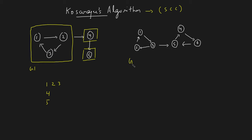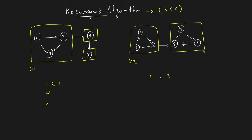For graph g2, the SCCs are: the first is nodes one two three, since every node is reachable to every other node in that group. The second is nodes four five six, which also form a strongly connected component. Only the nodes present in an SCC should be printed together; order doesn't matter. Kosaraju's algorithm helps us club the nodes of an SCC together.